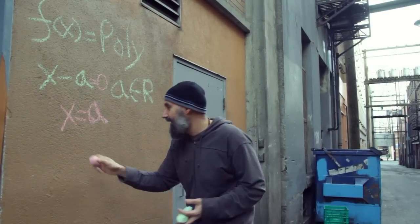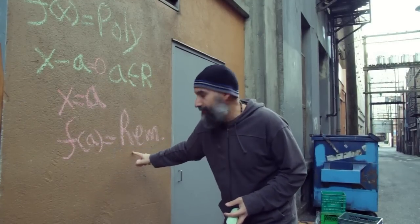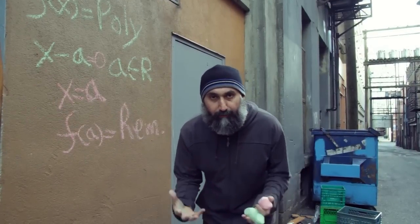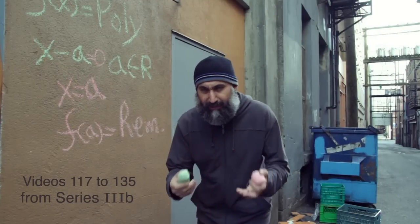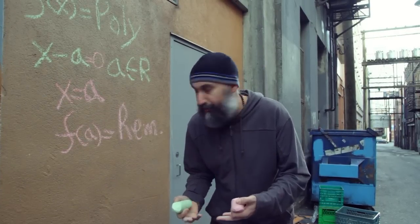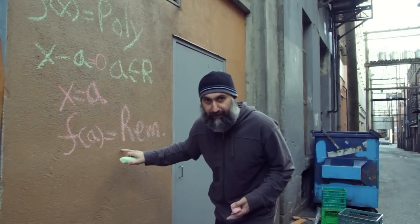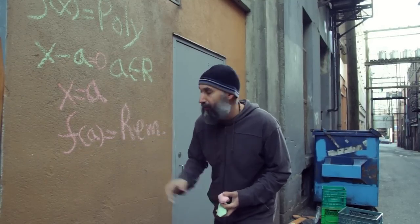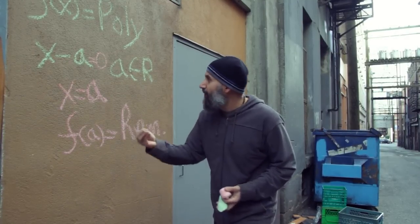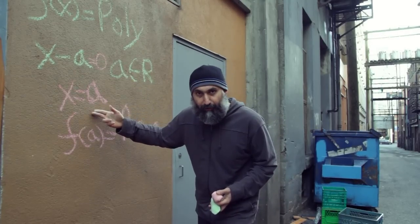So your remainder becomes F of A. And what is the remainder? We talked about this in series 3B, specifically when we went into polynomial long division and synthetic division. Your remainder is what your Y value is. So the remainder theorem tells you what your function is — what your Y is — for a specific X value.